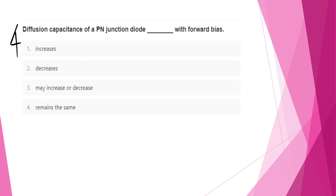The diffusion capacitance of a PN junction diode with forward bias — the answer is option A: it increases.